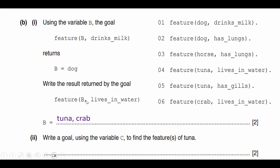So in the first one, B was used to find the animal that has the feature of living in water, and that's how we got tuna and crab.